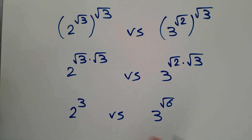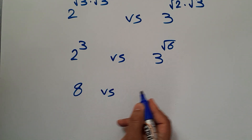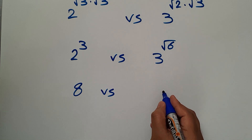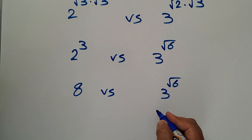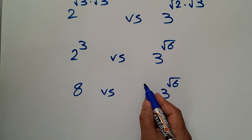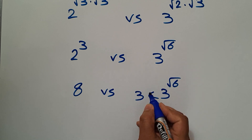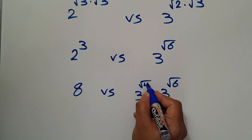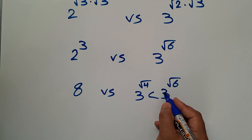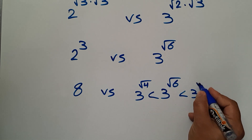2 to the power of 3 is 8, so the left side is 8. Now let's find a range of values for 3 to the power of square root of 6. Because square root of 6 is greater than square root of 4, we have 3 to the power of square root of 6 is greater than 3 to the power of square root of 4. And because square root of 6 is less than square root of 9, we have 3 to the power of square root of 6 is less than 3 to the power of square root of 9.